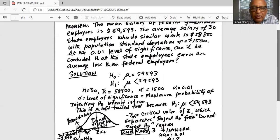The null hypothesis, of course, mu equal to $59,593. Sample size N is 30. Sample mean of the state employees is $58,800. Sigma is $1,500. Alpha is 0.01.